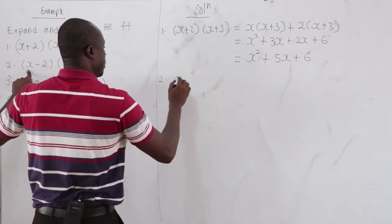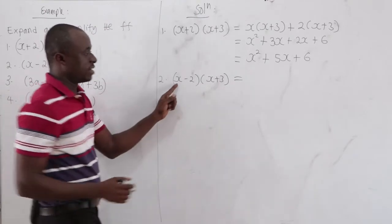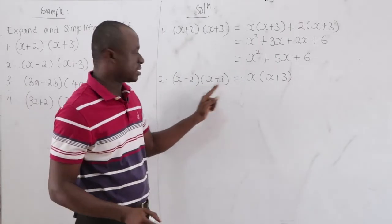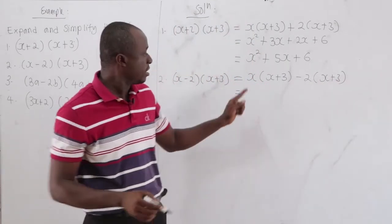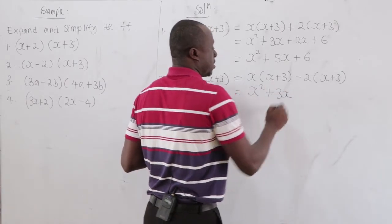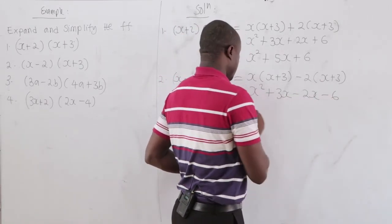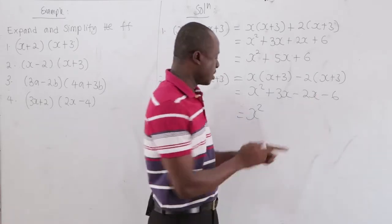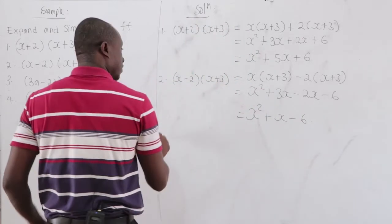Second: x minus 2 times x plus 3. x times x equals x squared, x times 3 equals 3x. Negative 2 times x equals negative 2x, negative 2 times 3 equals negative 6. Grouping: x squared, 3x minus 2x equals x, minus 6. Answer: x squared plus x minus 6.